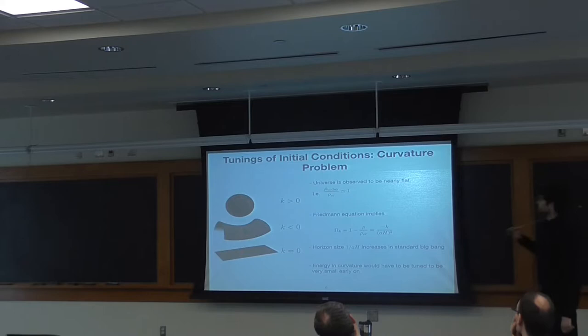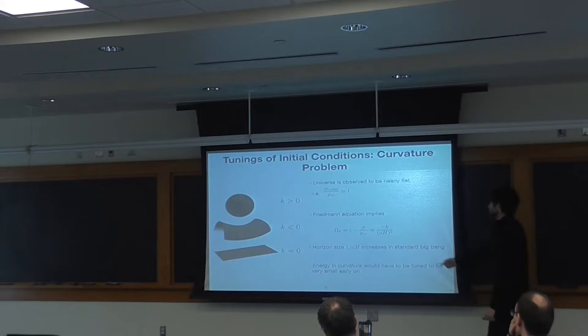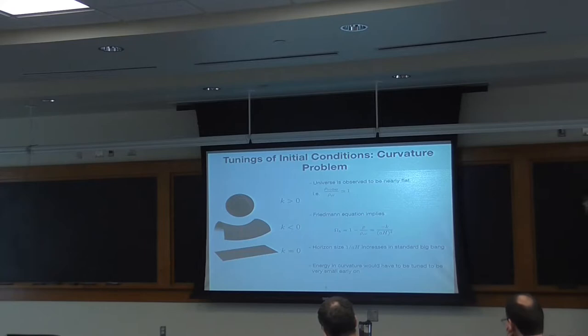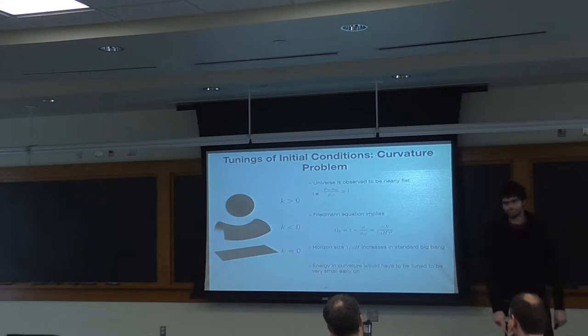The second Big Bang puzzle is known as the curvature problem: why is the spatial curvature of the universe observed to be so close to flat? The Friedmann equation says that the energy density of the curvature is directly related to the square of the horizon size, 1 over AH, where A is the scale factor. In a standard Big Bang scenario, this horizon size just increases from the time of the Big Bang. That means if the energy density of curvature was small today, it was even smaller earlier on. The question is what physical mechanism makes the curvature energy density smaller earlier on.